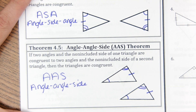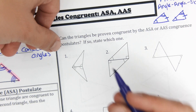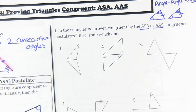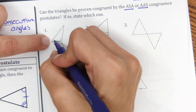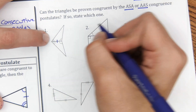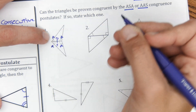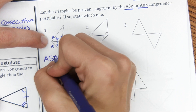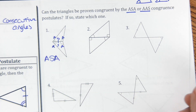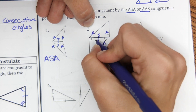Now we're going to practice this just like we did in the last examples. Can the triangles be proven congruent by ASA or AAS? For the first example, we have two angles in common on each triangle and the shared side is equal to itself, so that gives us angle-side-angle matching — that's ASA. For number two, the shared side is also in common, giving us angle-side-angle matching — also ASA.